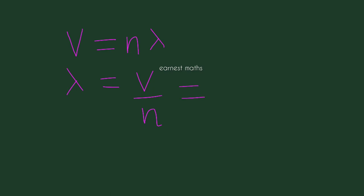In our question, the value of V is known and the value of N is known. V is equal to 400 meters per second divided by frequency which is 200 Hertz. The two zeros cancel out, leaving us with 4 divided by 2 which is 2. Finally, we get lambda is equal to 2 meters.